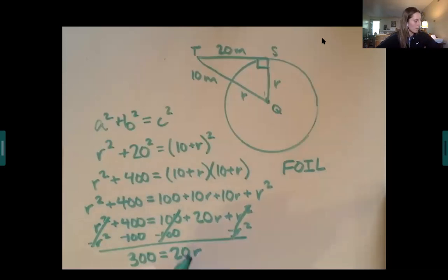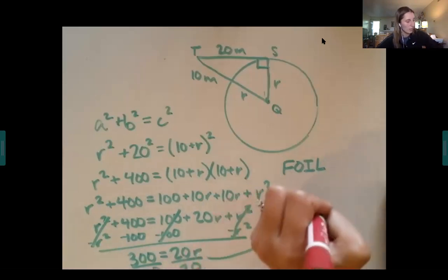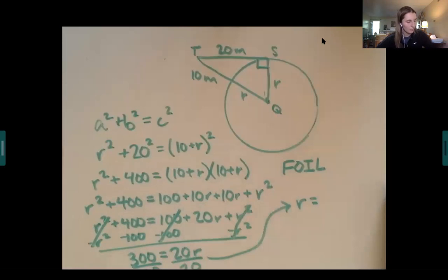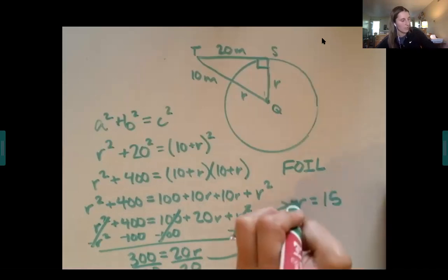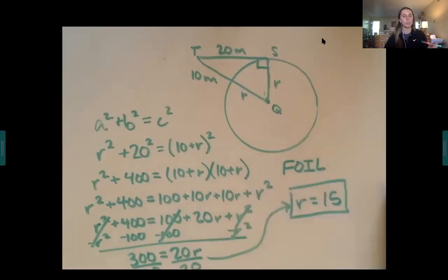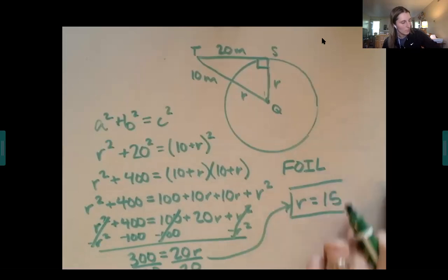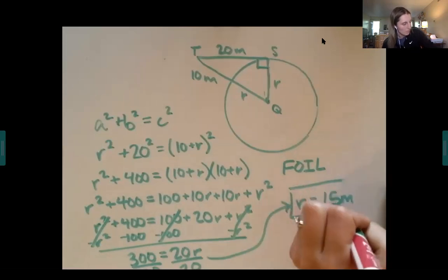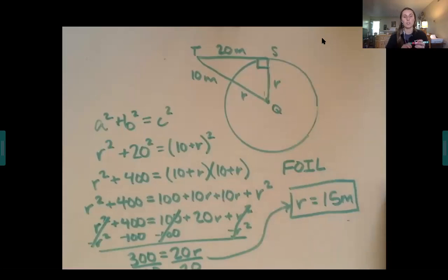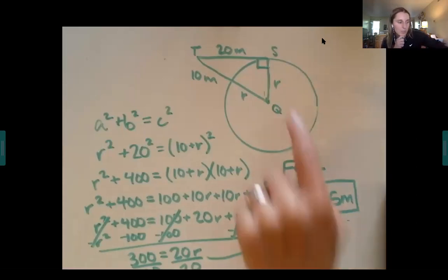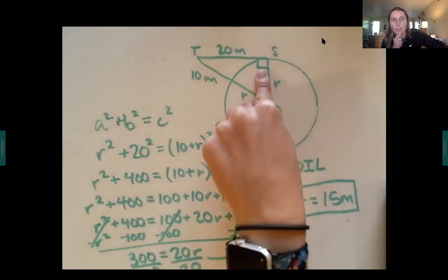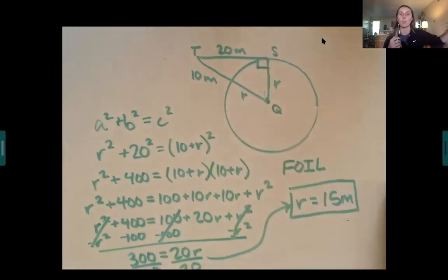Dividing both sides by 20, R equals 300 divided by 20, which is 15. So the radius of the circle is 15 meters. What we used was the first theorem — knowing this is a right triangle — so we could apply the Pythagorean theorem, which is what our whole last chapter was about.